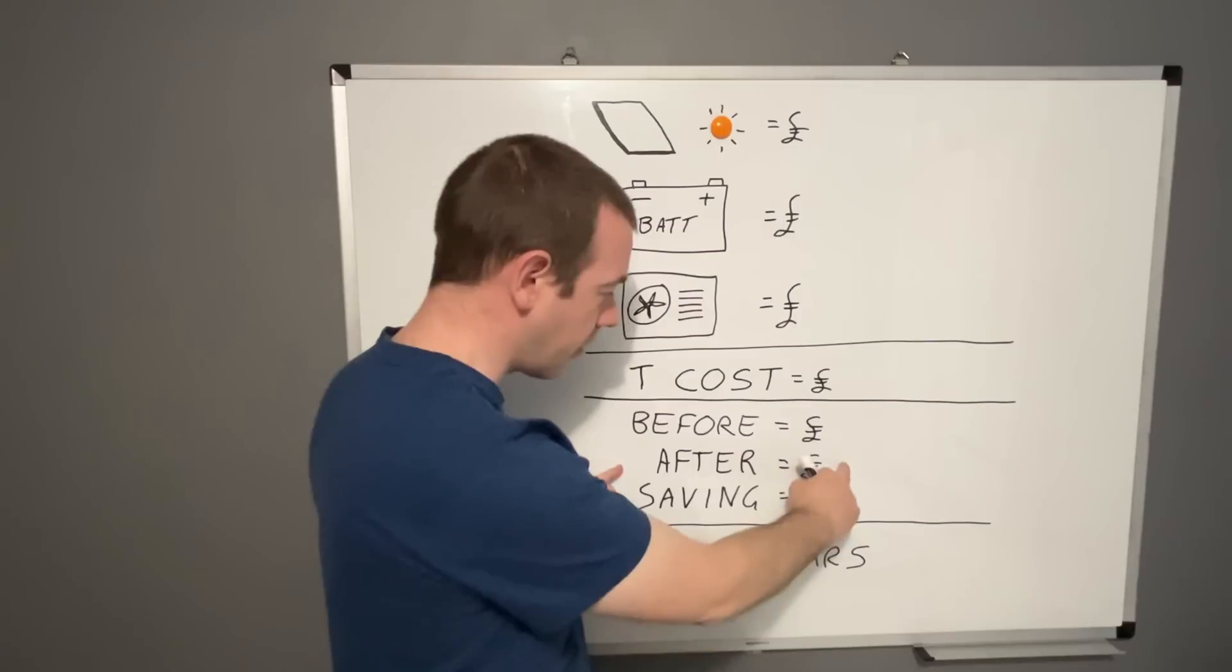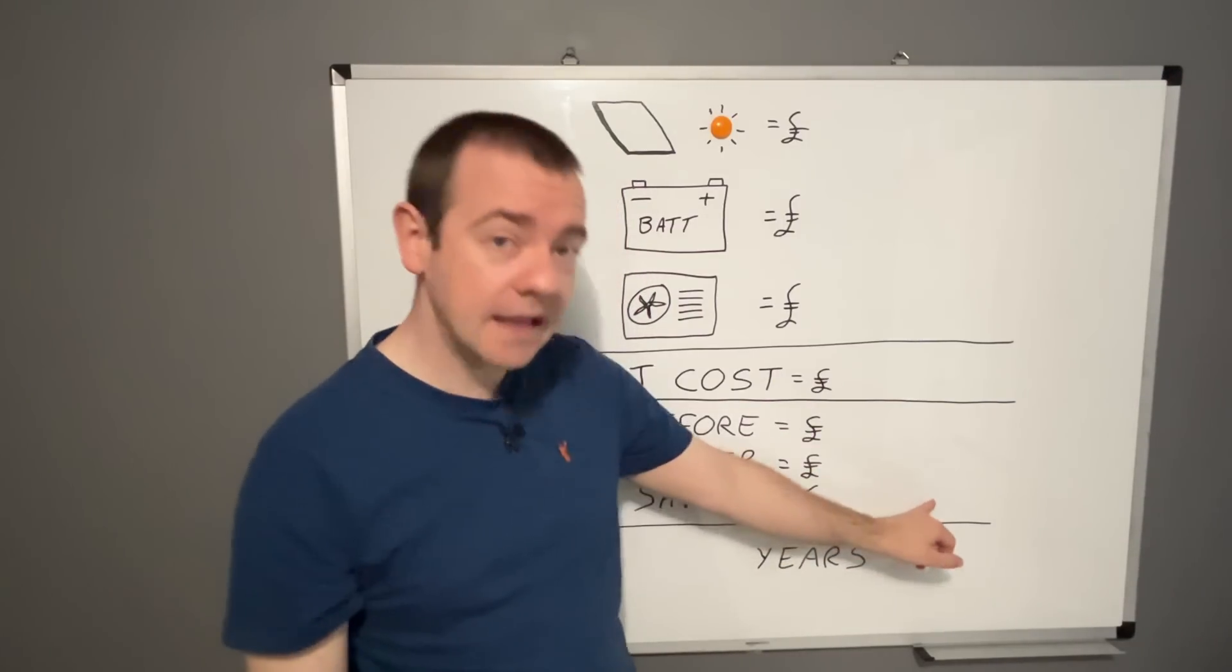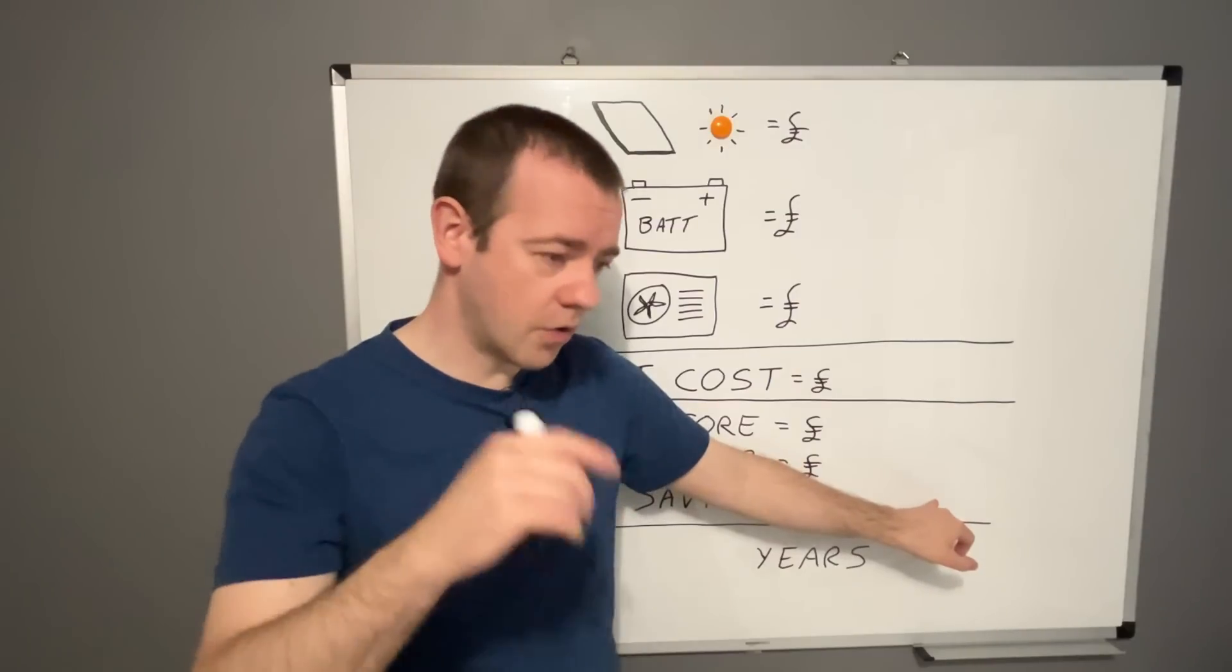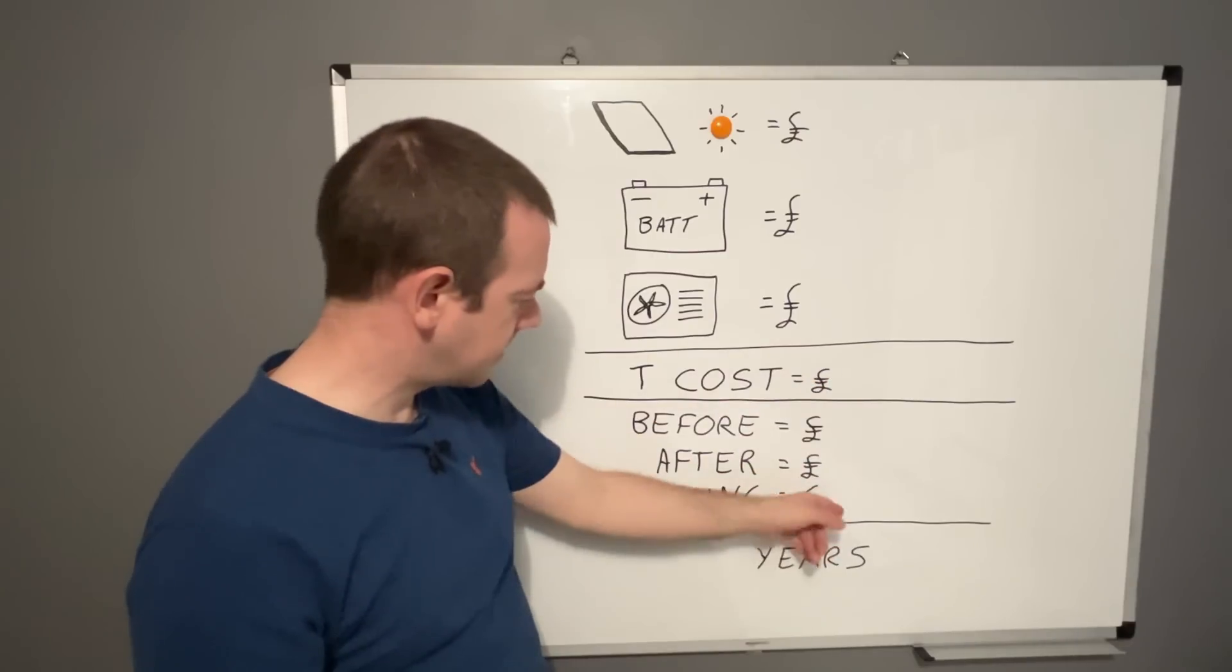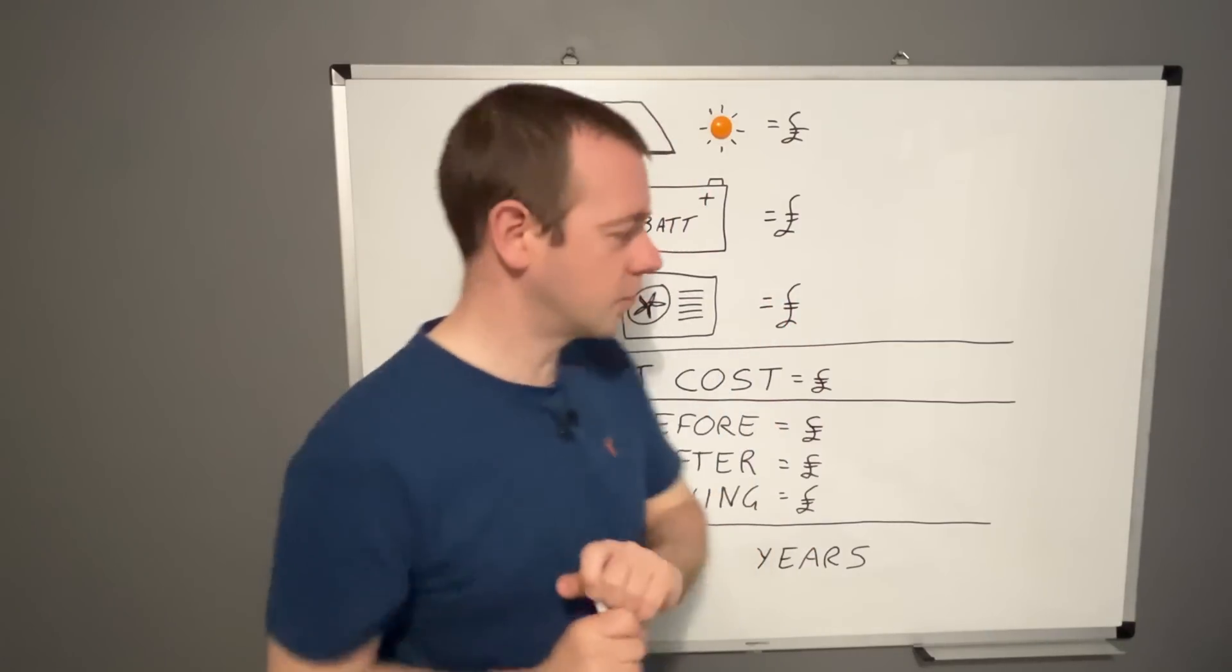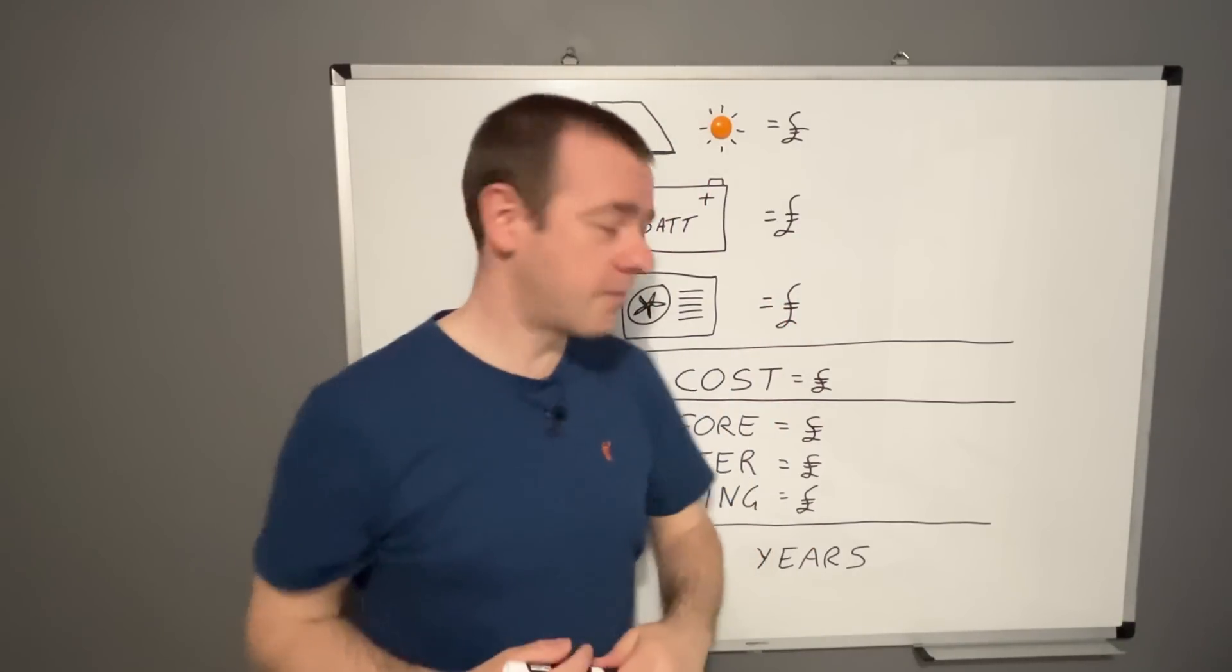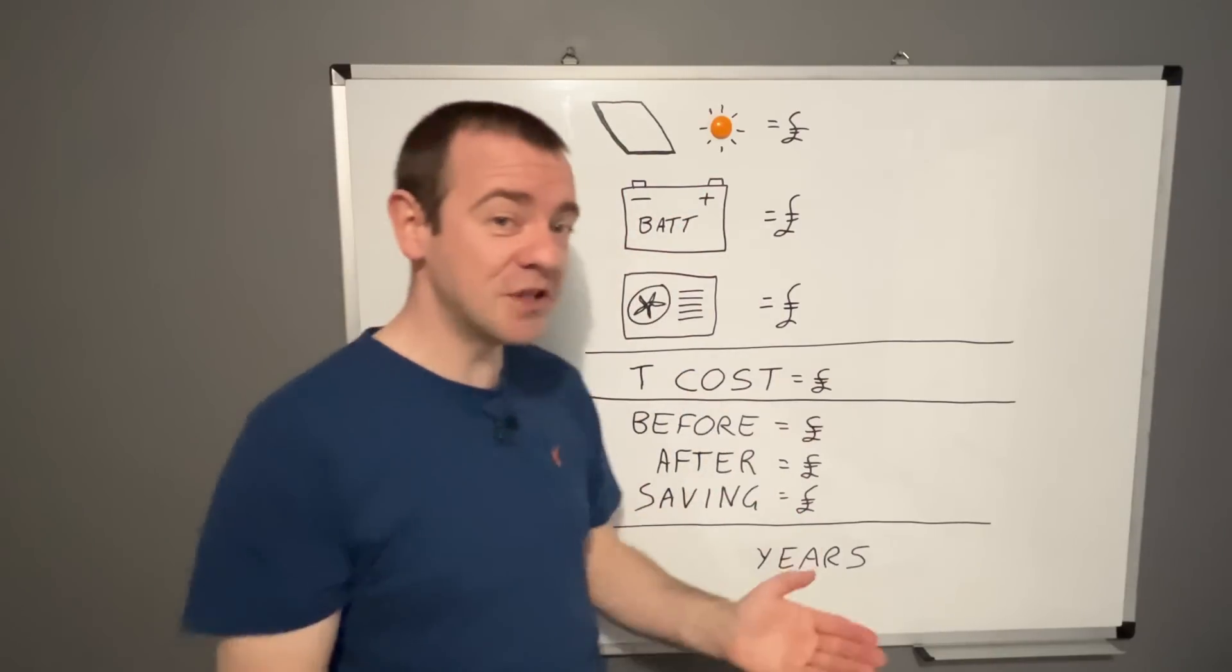And then the after, well, we already know that that's 550 pounds. I'll write that in in a second. So then we'll have the yearly saving. So that's based on the last 12 months. And then from that and that, we can see how many years it will pay itself back, so to speak, which is mainly what people are bothered about.